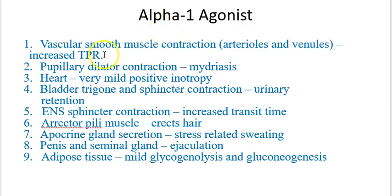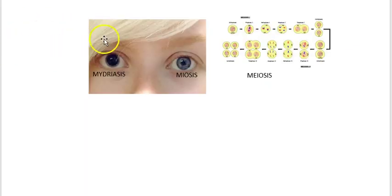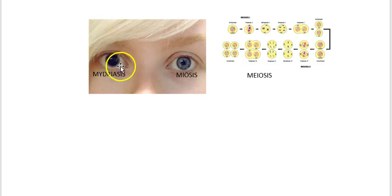When an alpha-1 agonist hits the pupillary dilator muscle, it produces contraction, and this is called mydriasis. Here's what mydriasis looks like with an alpha-1 agonist, and here's miosis, which is the opposite effect.